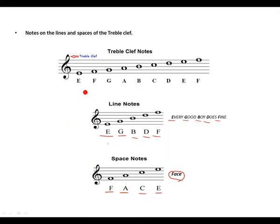Let's look at treble clef lines and spaces combined: E on the line, F space, G line, A space, B on the line, C space, D on the line, E space, and lastly F sitting on the line.